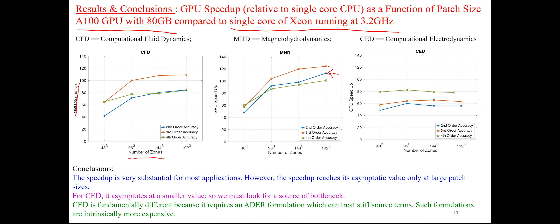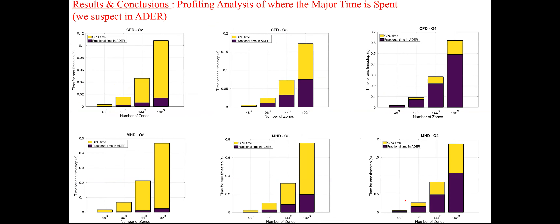For MHD applications the news is even better — somewhere between 100 to 120 times speedup. For CED applications there is a little bad news: it asymptotes to a smaller value of around 60 to 80 times, which is not necessarily so appetizing. The CED applications require an ADER formulation that is different because it needs to treat stiff source terms, and such formulations are intrinsically more expensive.